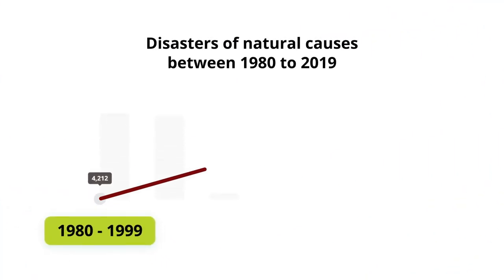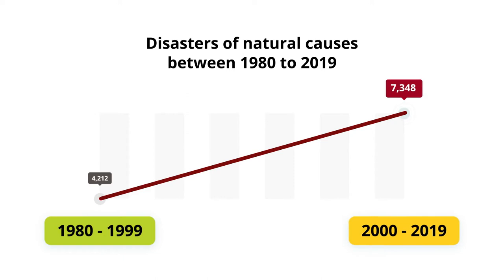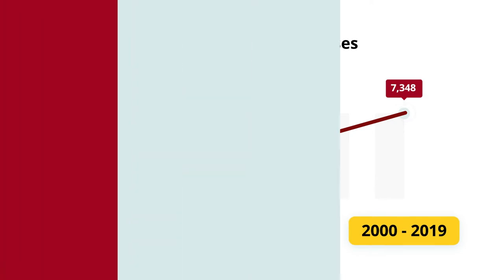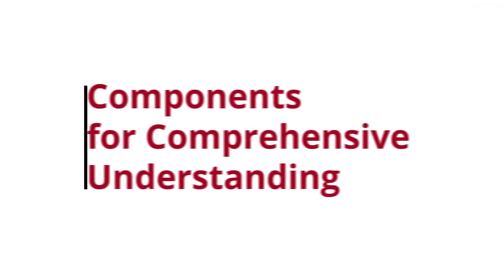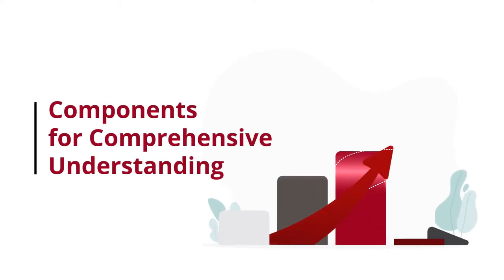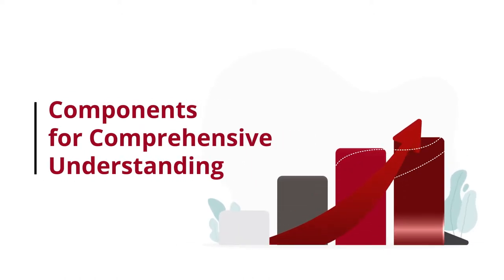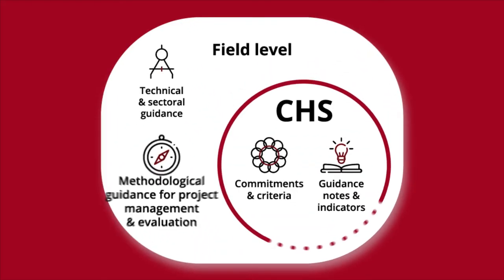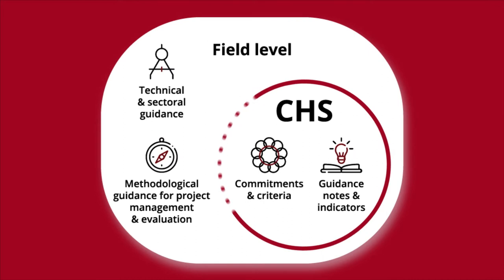There have been over 7,000 disasters in the 21st century, affecting 4 billion people across the world. Comprehensive solutions are incorporated into global frameworks and sustainable development goals, but local actors actually respond to the impacts on the ground. Disaster preparedness and management are now a grassroots to global priority.